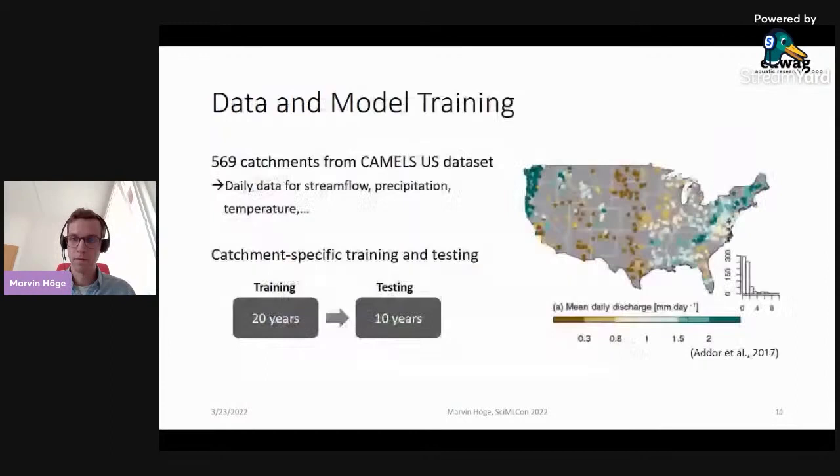We applied this generic model setup to 569 catchments, for which we have daily data of stream flow, precipitation, temperature, and so on. The data is from the so-called CAMELS data set that covers several hundreds of catchments all over the United States. And as shown on the right-hand side, you can see the distribution of mean daily discharge. For each catchment, we trained our model on 20 years of daily data and then evaluated the performance on the next 10 years.